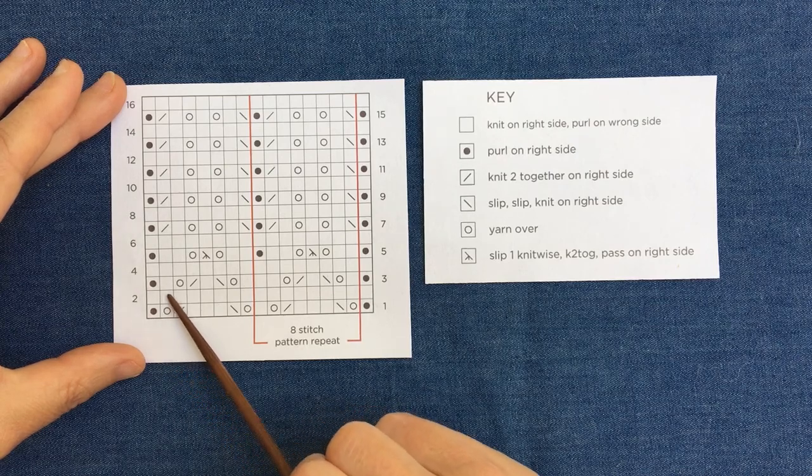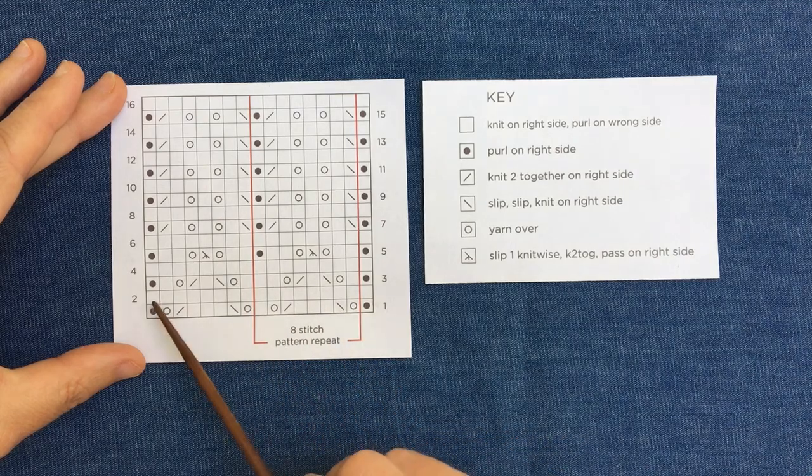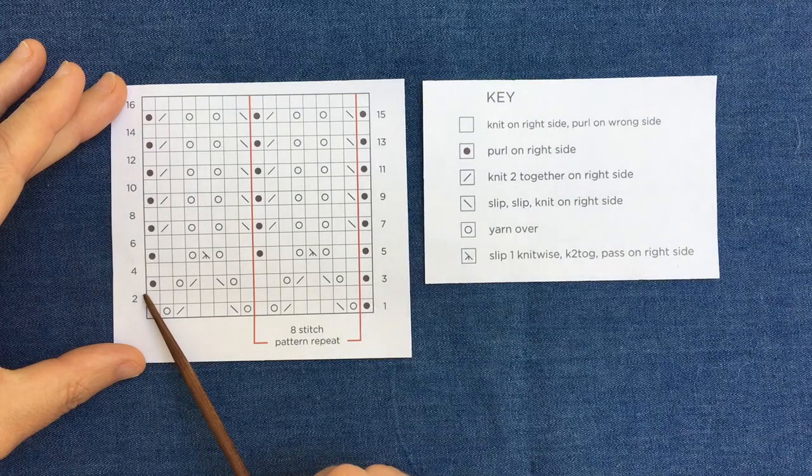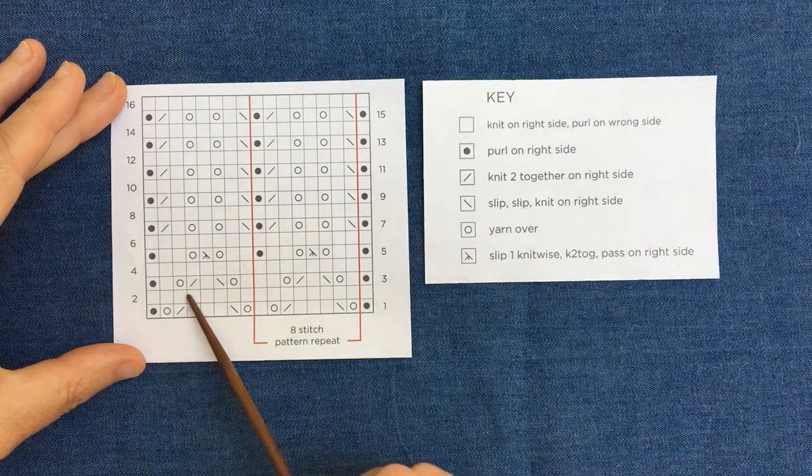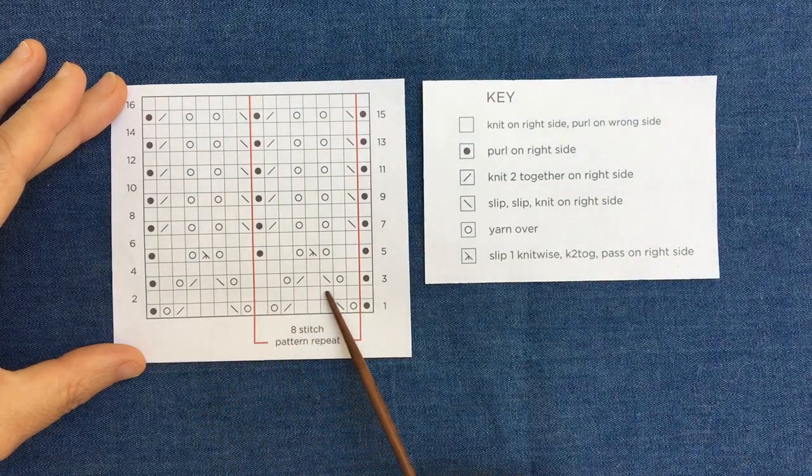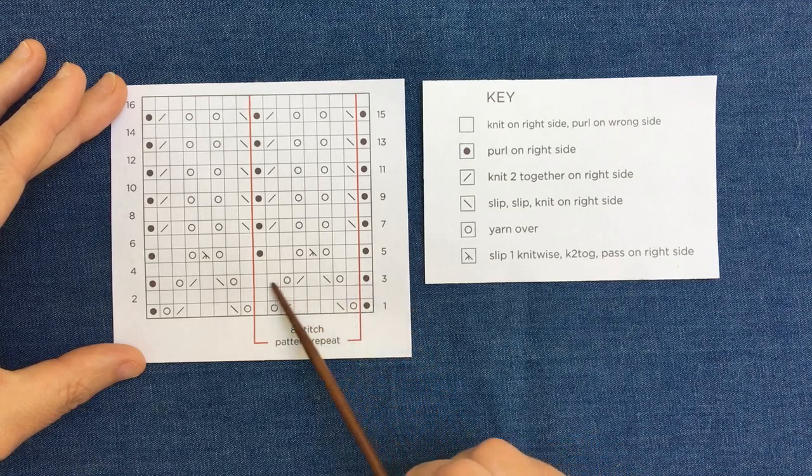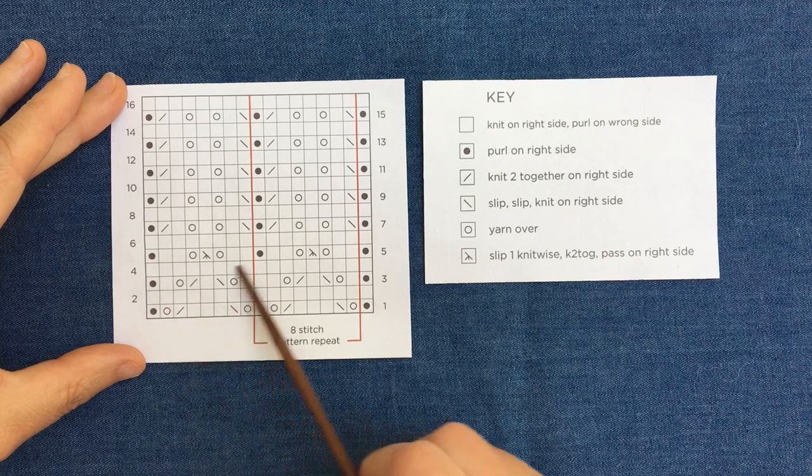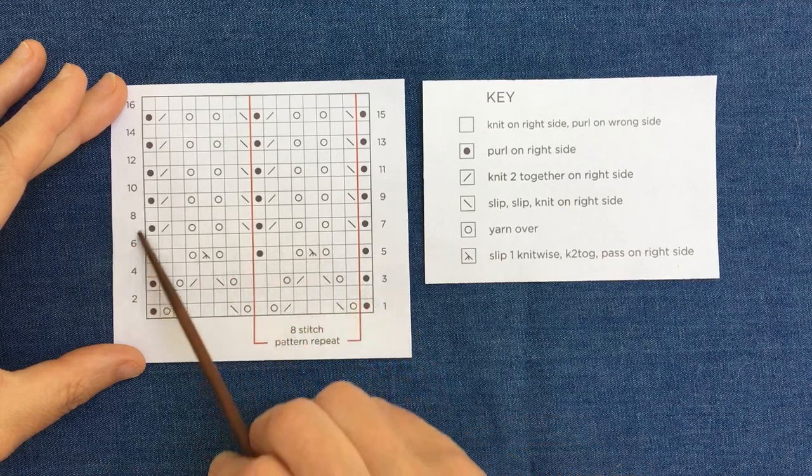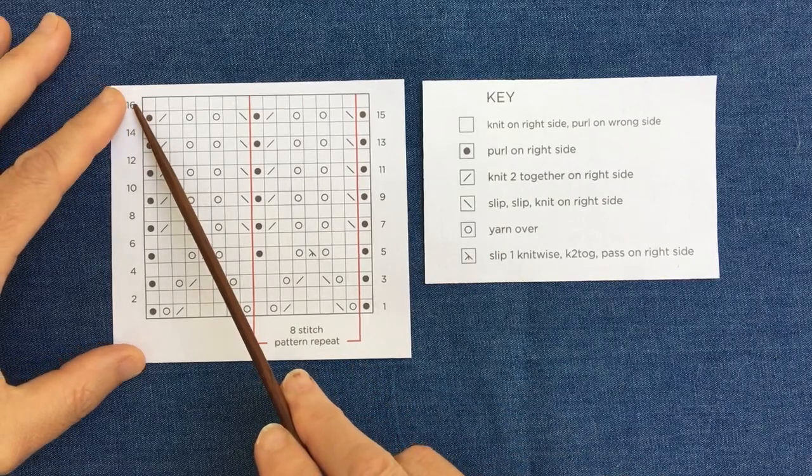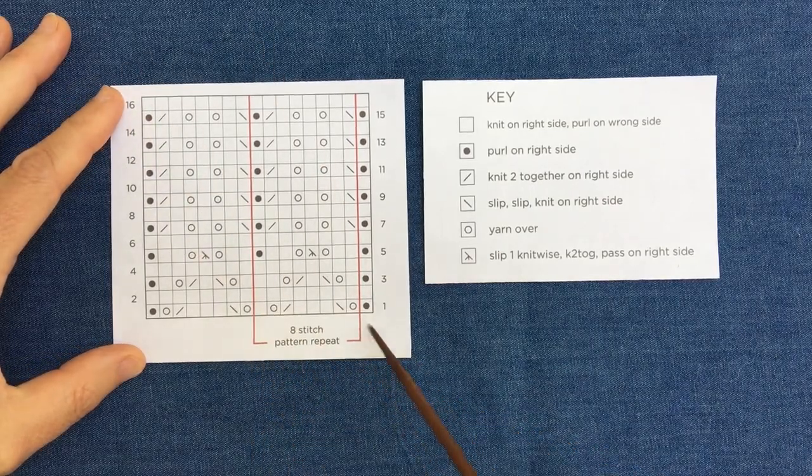You'll just work all your way back along. You'll see there's no symbols in this row which makes it very straightforward because actually all that means is you're going to purl all the way along without any extra different stitches. Then row three reading your symbols again, row four wrong side, row five right side and so on all the way along. Once you reach the top row 16, you just work your way back down to the beginning and start again with row one.